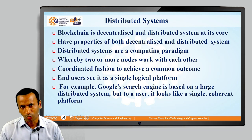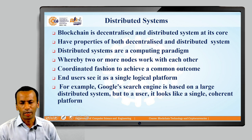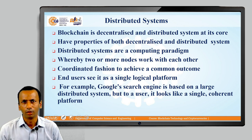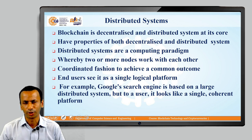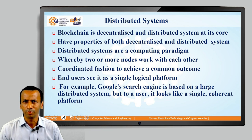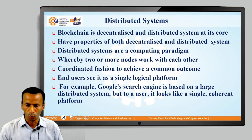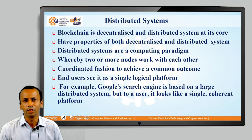Whenever we discuss Bitcoin or Blockchain technology, the very first terminology that comes to mind is distributed system. Blockchain is a decentralized and distributed system at its core, meaning there is no central controller or administrator monitoring this blockchain system. It is called a distributed system because it consists of different computers and nodes working together. A distributed system is a computing paradigm where a number of nodes on a network come together and work in a coordinated fashion to achieve a common goal, but as an end user you can see it as a single coherent logical platform.